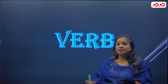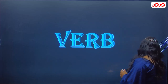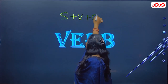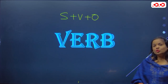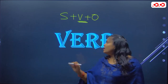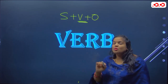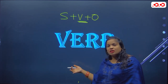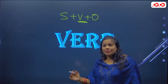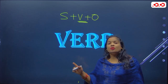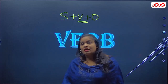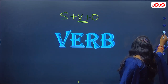Today's topic is verb — in Hindi we call it kriya. This is one of the most important parts of speech. Whatever parts of speech exist, verb is the most important. In the basic sentence structure — subject plus verb plus object — verb plays a vital role. For sentence completion, verb is very important. We will cover theory and practical exercises together.